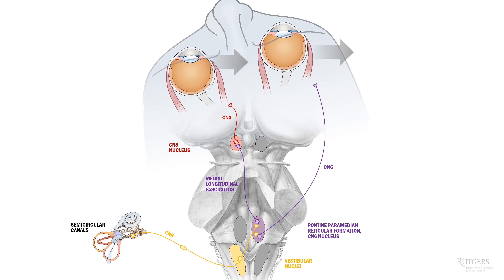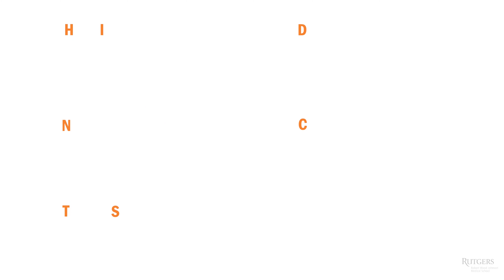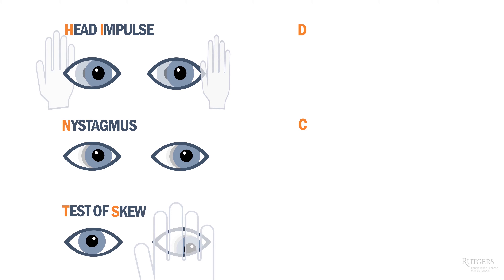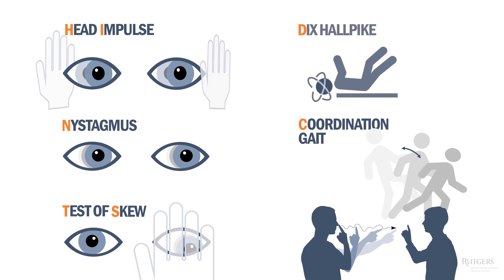In addition to the general screening neurological examination, another powerful tool is the HINTS exam. HINTS stands for Head Impulse, Nystagmus, Test of Skew. I also added CNG — Coordination and gait, assessing for appendicular and truncal ataxia — and D for Dix-Hallpike maneuver.